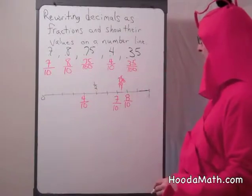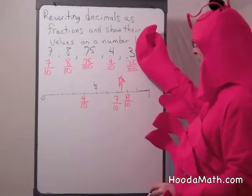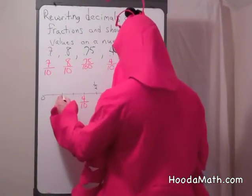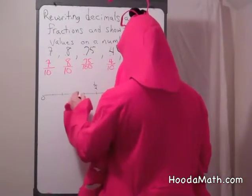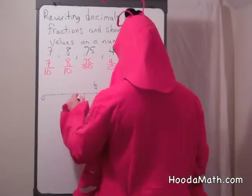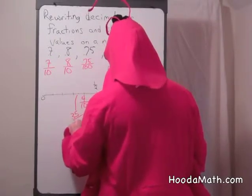And finally, 35 hundredths. Well, that's the same if we cover the 5. 3 tenths, bigger than 3 tenths. 1 tenth, 2 tenths, 3 tenths, 4 tenths. So it's between 3 tenths and 4 tenths. This would be 35 hundredths.